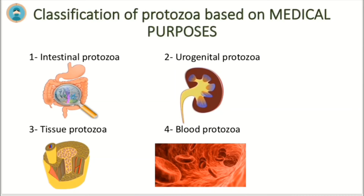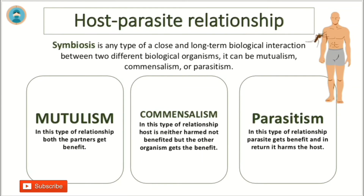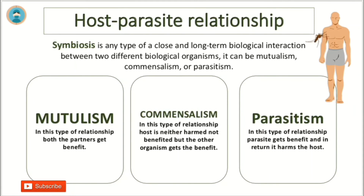Classification of protozoa based on medical purposes: Intestinal protozoa — for example, Giardia lamblia. Urogenital protozoa — for example, Trichomonas vaginalis. Tissue protozoa — for example, Leishmania. Blood protozoa — for example, Plasmodium. The host-parasite relationship called symbiosis is any type of close and long-term biological interaction between two different biological organisms.